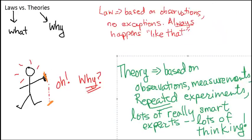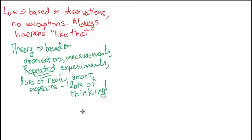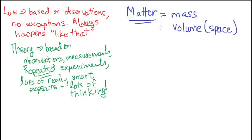So a law tells you what happens. A theory tells you why it happens. In order to talk about the differences between laws and theories, let's look at or review some of the things that we've already talked about to use as examples.